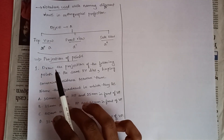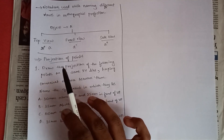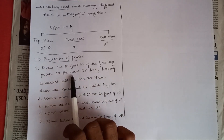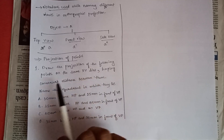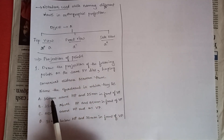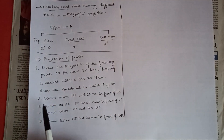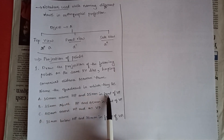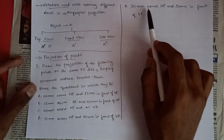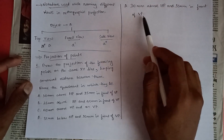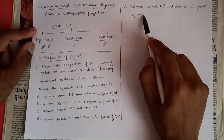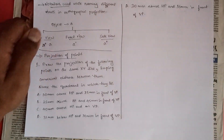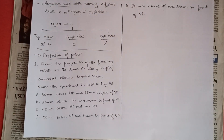Now let's get into a problem on projection of points. The problem says: draw the projection of the following points on the same XY line keeping convenient distances between them, and name the quadrant in which they lie. Point A: 30 mm above HP and 35 mm in front of VP — this means the point will be in the first quadrant. Let's take a scale and draw HP and VP.